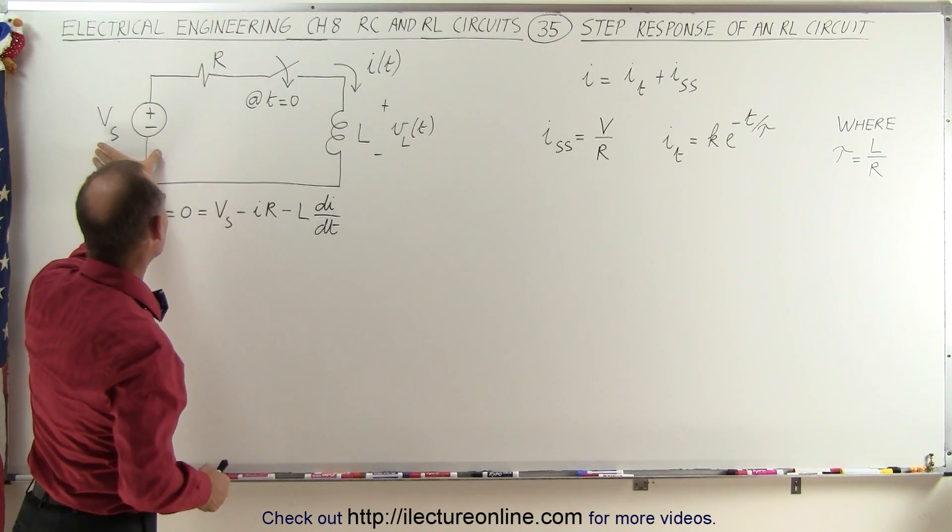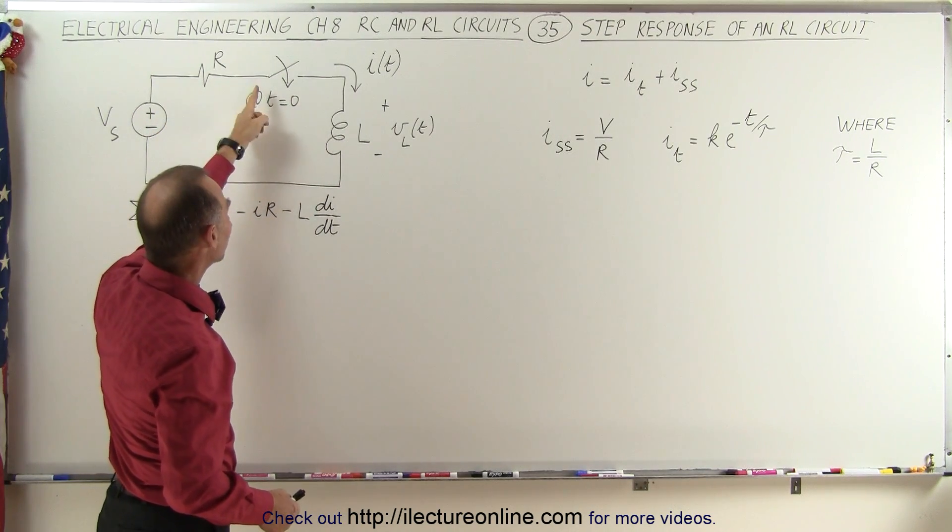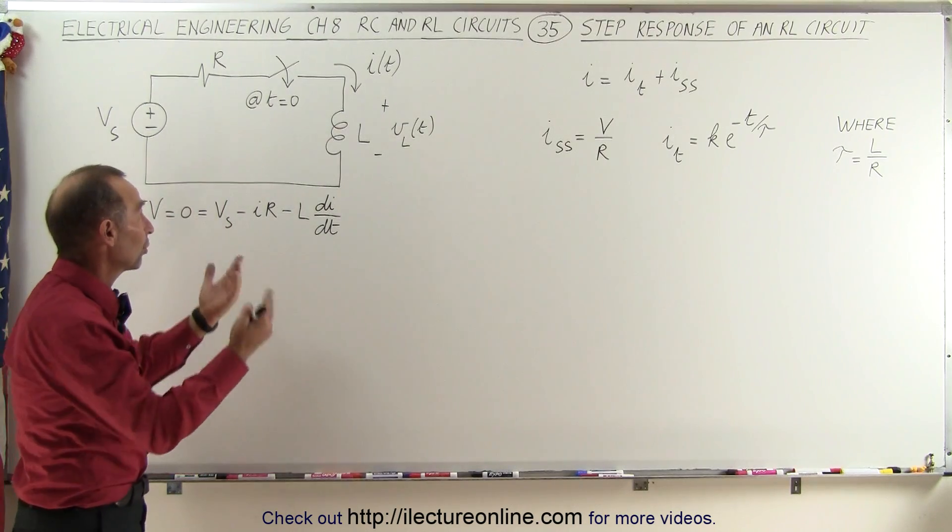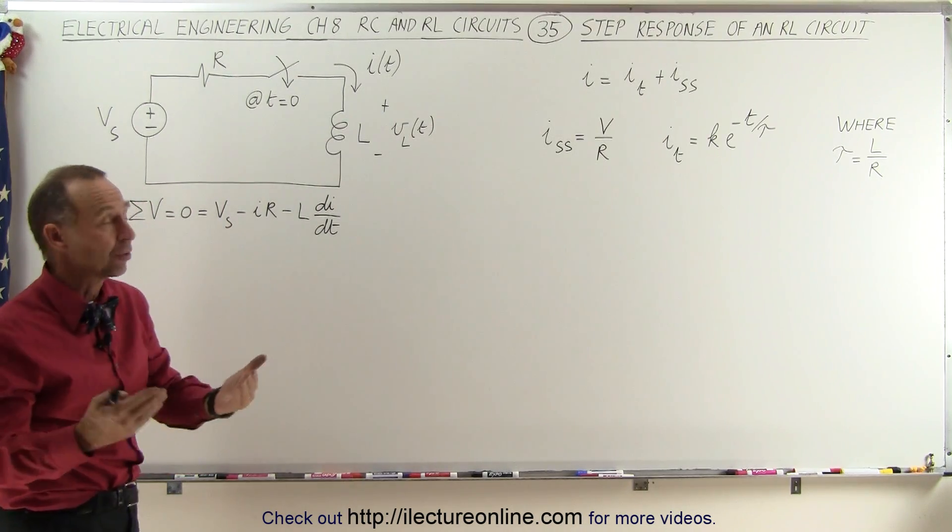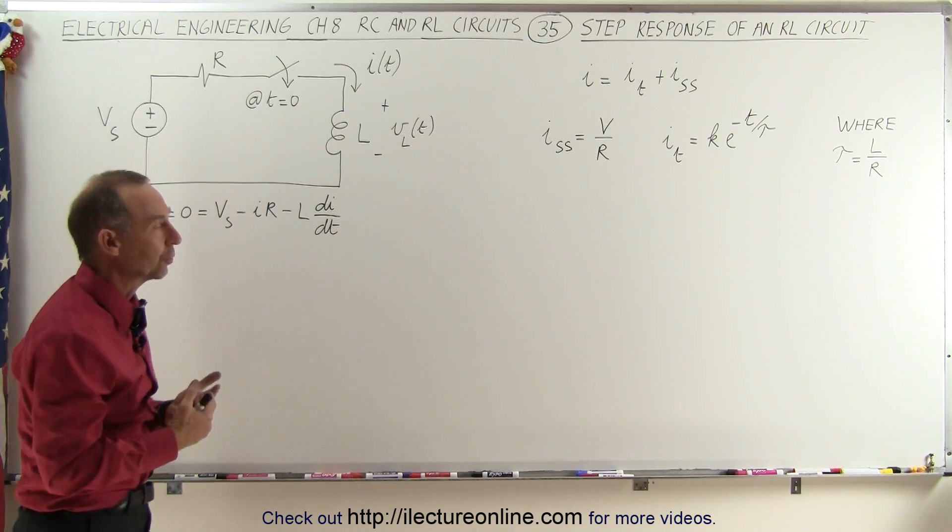Let's say we have a voltage source, a resistance, and an inductor. We have a switch which closes at t equals zero, which means that before the switch closes there will not be any current in the circuit. The moment the switch closes, what will be the current in the circuit?